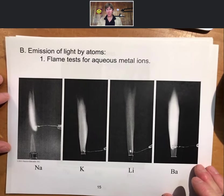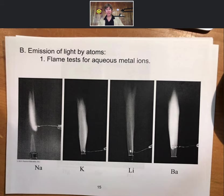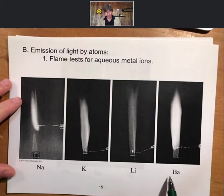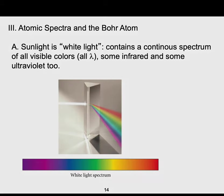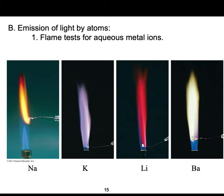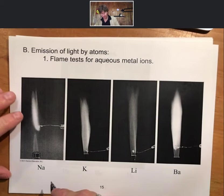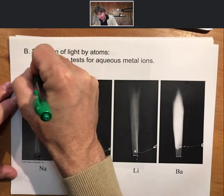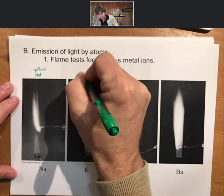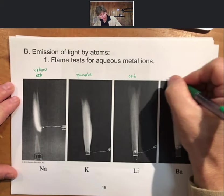Now we're going to look at the results of flame tests for aqueous metal ions. These are metal ions put into a flame, and each of these metal ions has a different color when put into a flame. Yellow for sodium, purple for potassium, red for lithium, and barium is sort of a whitish yellow.